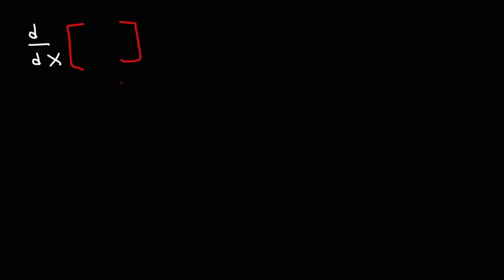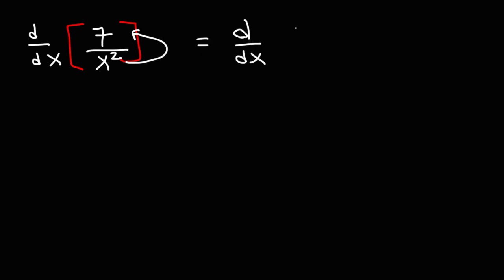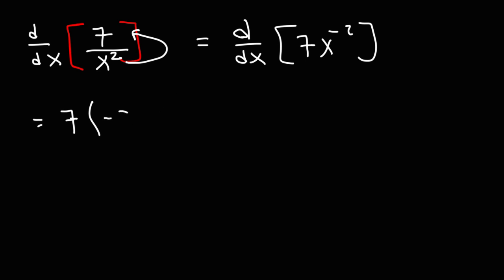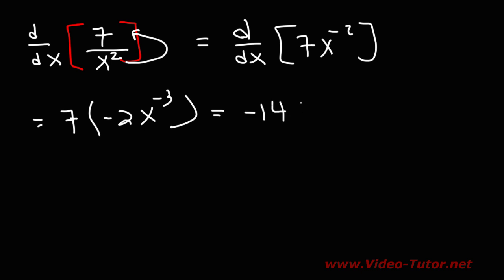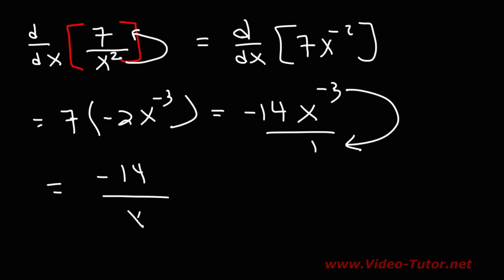Let's try a similar example: find the derivative of 7 over x squared. Feel free to pause the video if you want to try that problem. Let's begin by rewriting the expression — this is equivalent to the derivative of 7 times x to the minus 2. Using the power rule, the derivative of x to the minus 2 is negative 2x to the negative 3. Then we multiply 7 and negative 2, which is negative 14. Moving the x to the bottom, the answer is negative 14 over x cubed.